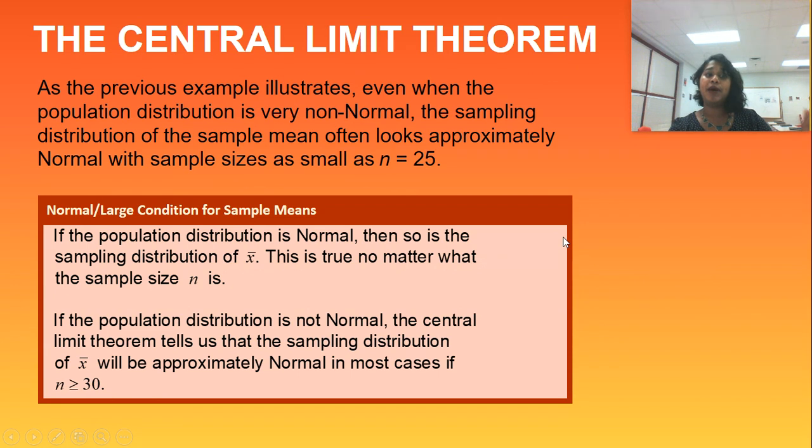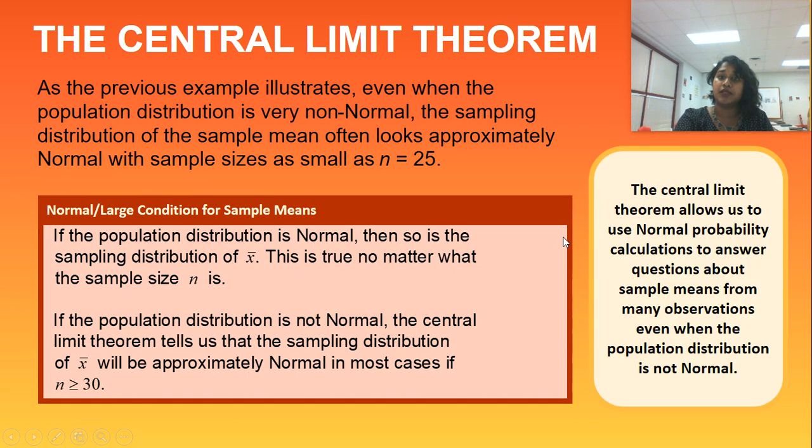So there's another wrap-up on the normal or the large conditions for sample means. That's dealing with our central limit theorem. And make sure that you know that central limit theorem also allows us to use normal probability calculations to answer other questions. So because we recognize that as our n size gets very large, that means our sampling distribution becomes normal, we get to use normal formulas or probability calculations.